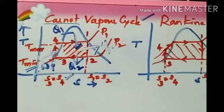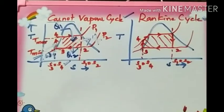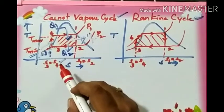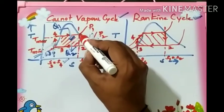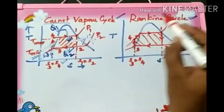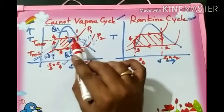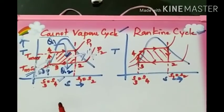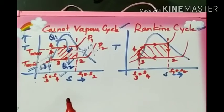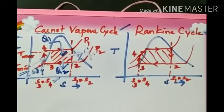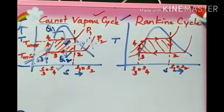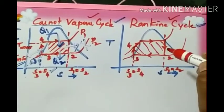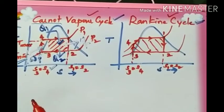Now let us broadly look at the two cycles — the Rankine cycle and the Carnot vapor power cycle — for the same steam power plant. For reference, after the boiler we consider the steam condition to be dry steam, so we are comparing a dry steam Rankine cycle with the Carnot cycle. Looking at the two diagrams and identifying the differences allows us to very easily compare between the two cycles.